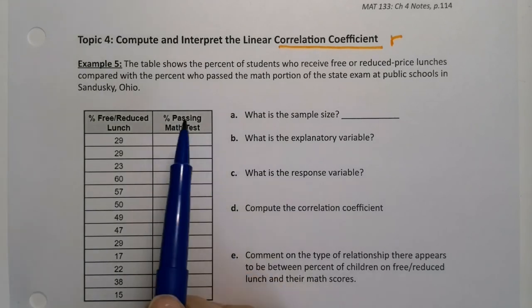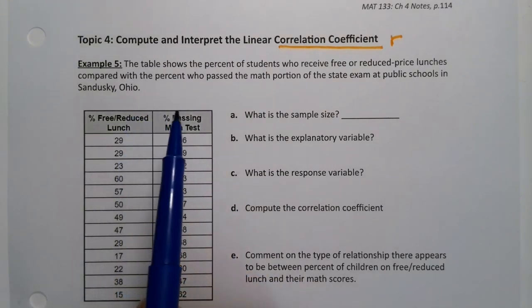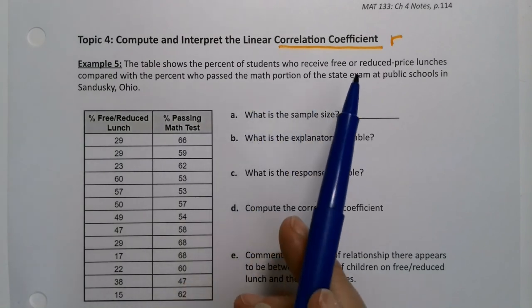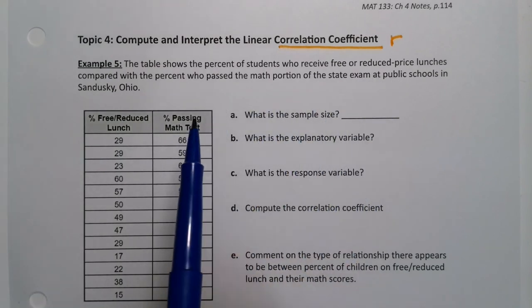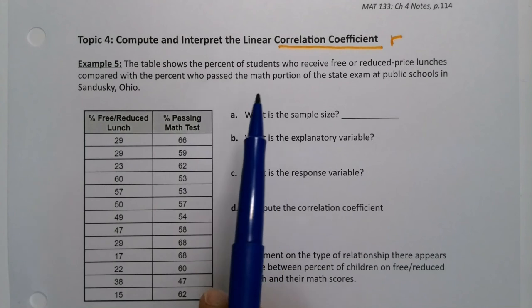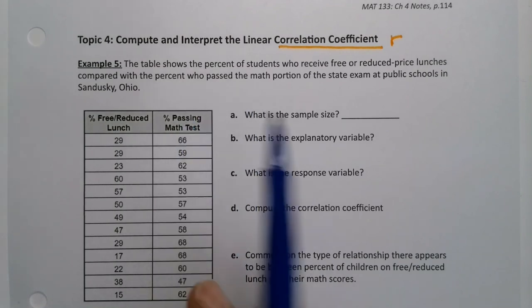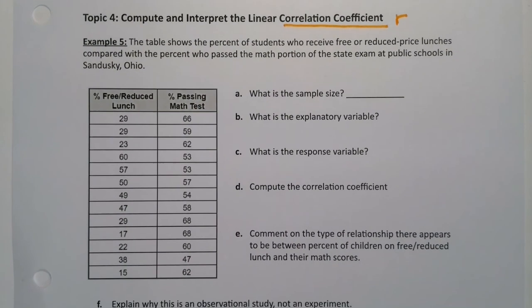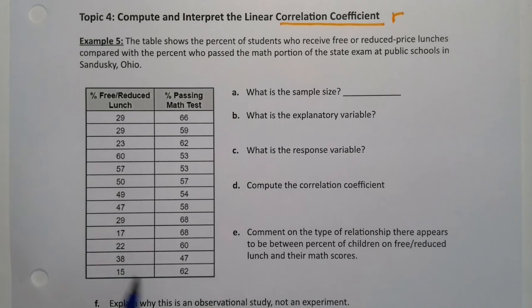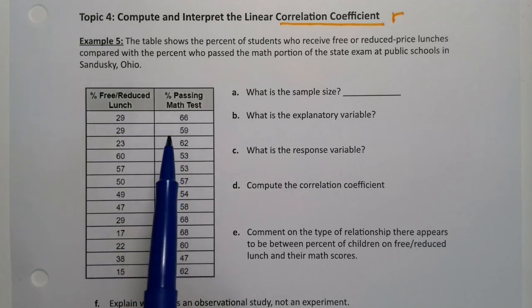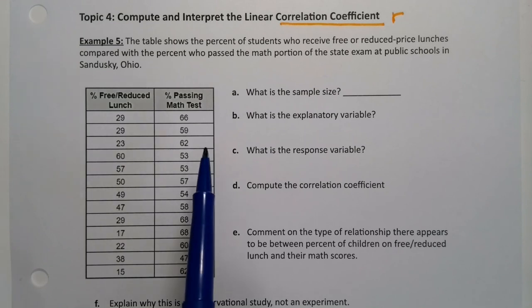Let's see that in an example. The table below shows the percent of students who receive free or reduced-price lunches compared with the percent who passed the math portion of the state exam at public schools in Sandusky, Ohio, the home of Cedar Point. So here's the percent of students that need free or reduced lunch at different schools in that area, and here's the percent that passed the state math exam. There's this big state exam that all students have to take. This is the percentage that passed the math portion of it.